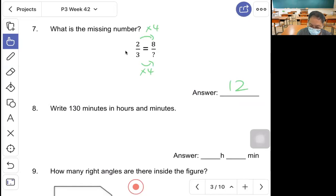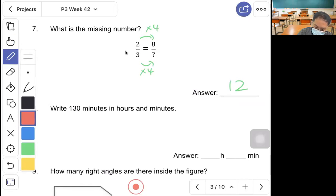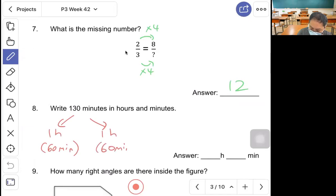Question 8, write 130 minutes in hours and minutes. 1 hour is 60 minutes, another 60 minutes, so that will be 10 minutes remaining. It's 2 hours and 10 minutes.